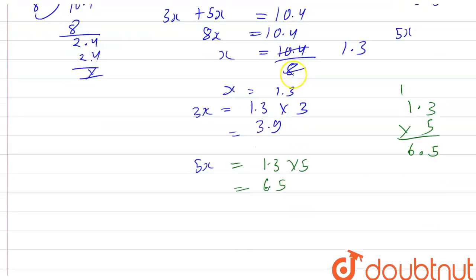So if we divide into the ratio of 3 is to 5, then the digits will be 3.9 and 6.5. 3.9 and 6.5, that is our answer for this question. Thank you so much everyone.